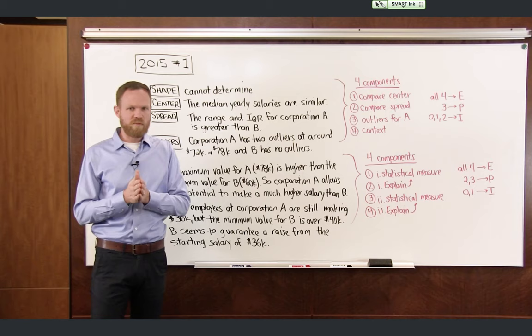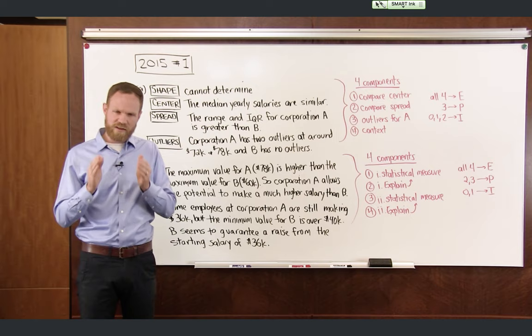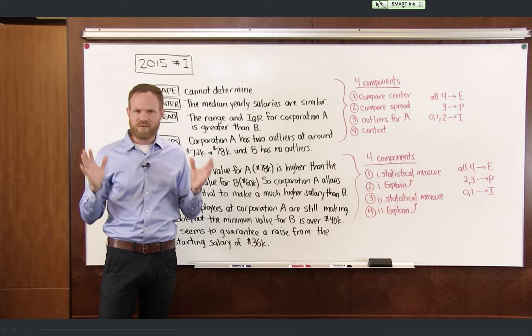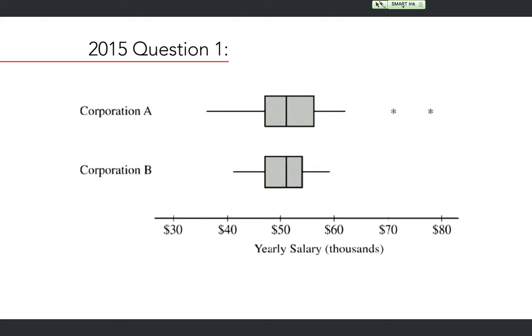Because we are given box plots, you don't necessarily know where the individual data values are within each interval, so we really can't say anything overall about the shape. For the center, looking at the box plots, we can identify the median as the value at the center of the box.